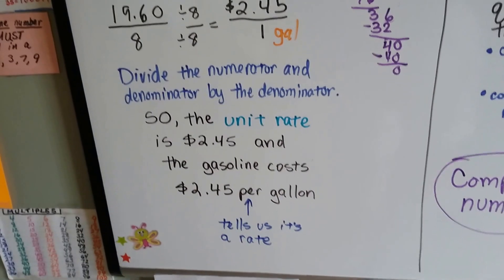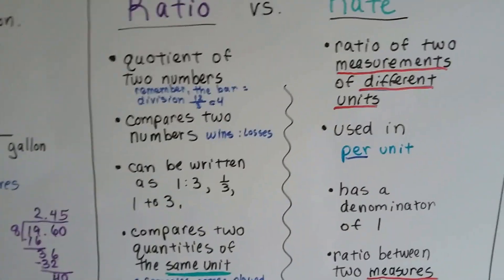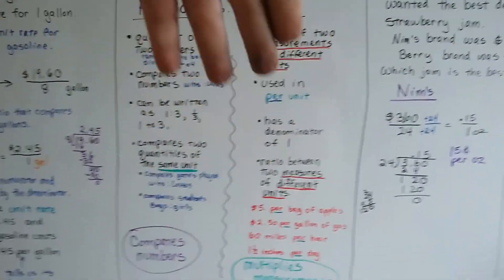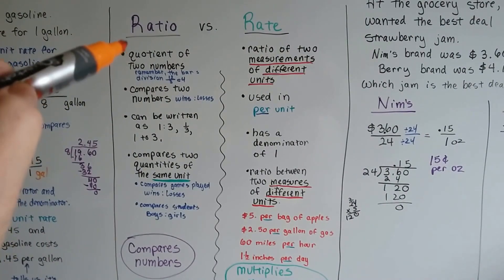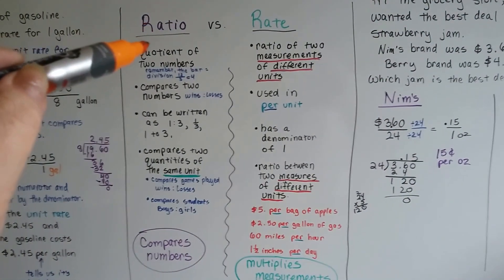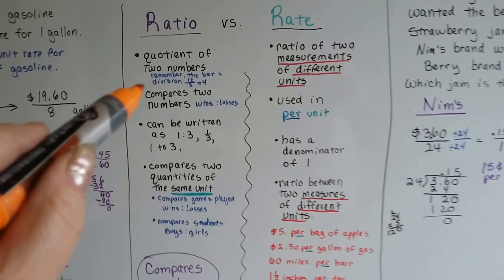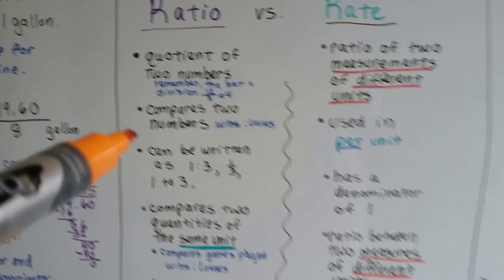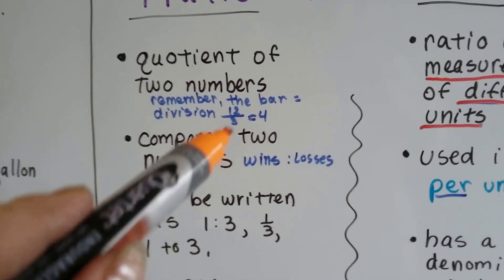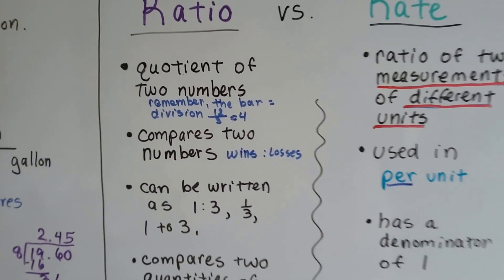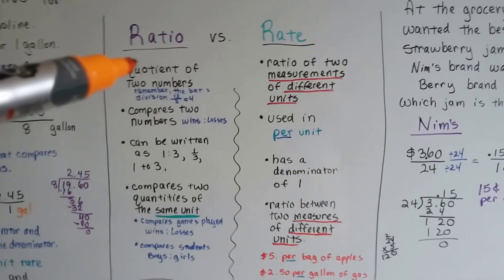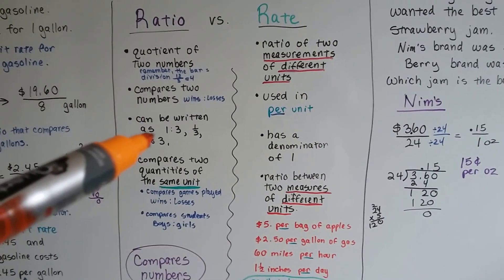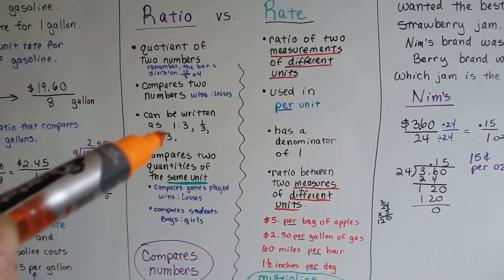When we see 'per,' that tells us it's a rate compared to a ratio. Here's the big comparison: a ratio versus a rate. A ratio is a quotient of two numbers — the bar in the fraction is a division bar. So if we had 12 over 3, it would equal 4, like a division problem. A ratio compares two numbers, like wins versus losses, and can be written as 1 to 3 or 1 third.